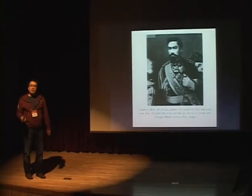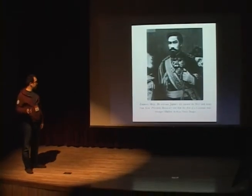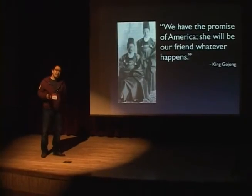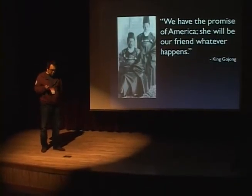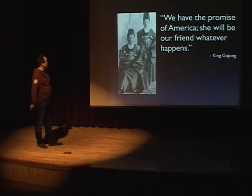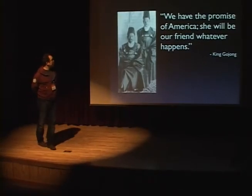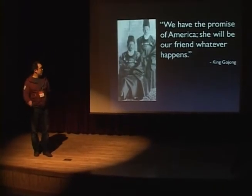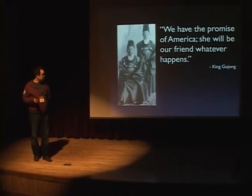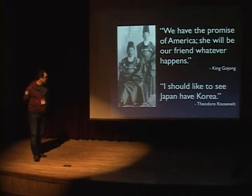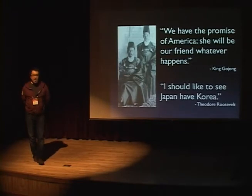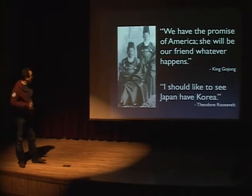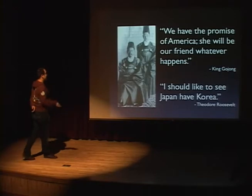Basically, Roosevelt sent Taft to meet this person. Roosevelt's daughter actually met King Gojong, and Gojong said, 'We have the promise of America; she will be our friend whatever happens.' But Roosevelt said in the Oval Office, 'I should like to see Japan have Korea.' So these guys just didn't know.